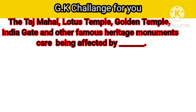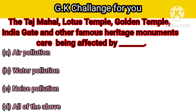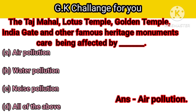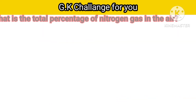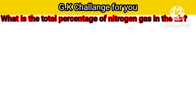Next question: The Taj Mahal, Lotus Temple, Golden Temple, India Gate and other famous heritage monuments are being affected by — Option A: Air pollution, B: Water pollution, C: Noise pollution, D: All of the above. Your right answer is air pollution.